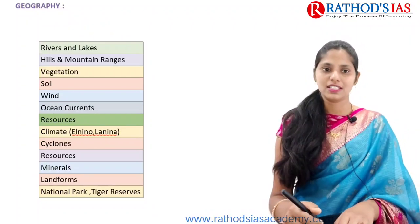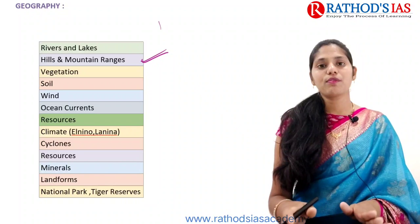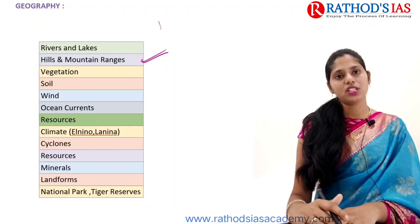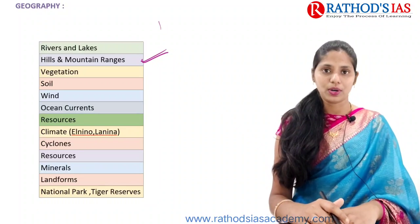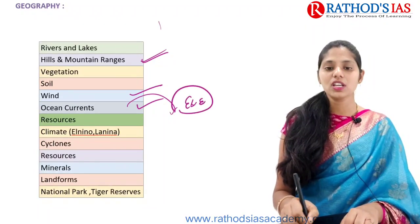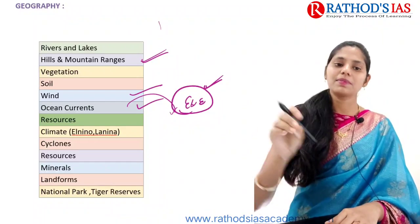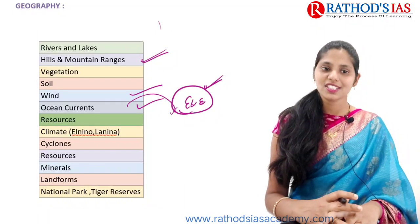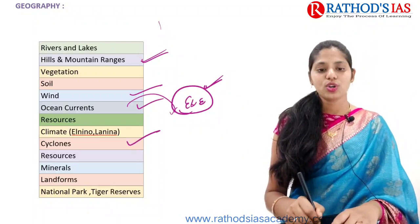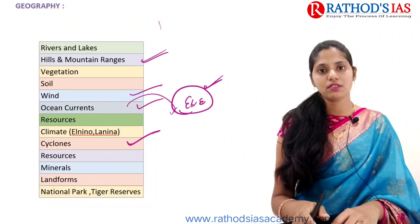Now the core areas of Geography. Every year you see questions from rivers and lakes — where they originate, which are the right-bank or left-bank tributaries, and where they join. You need to know about hills, mountain ranges, vegetation — which type of forest is present in which area in India and the world — and soil. Wind and Ocean Currents are also important, and we can relate ocean currents to environment topics like the plastic garbage patch in the Pacific Ocean. You also need to focus on resources, climate — especially El Niño and La Niña concepts in the Indian monsoon — and cyclones, because India has been hit by many cyclones recently.